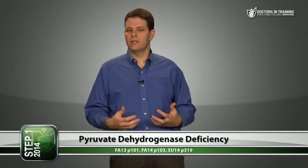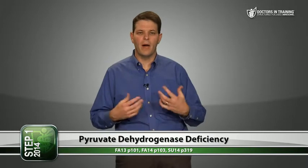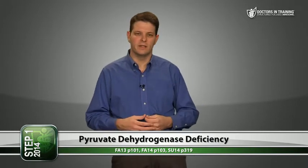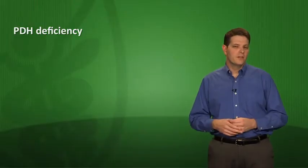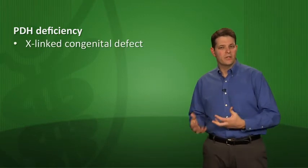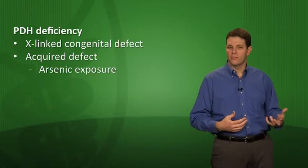What if you're deficient in pyruvate dehydrogenase and can't make acetyl-CoA? This is called pyruvate dehydrogenase deficiency. You get a backup of pyruvate that gets converted to other things such as lactate, resulting in lactic acidosis, or it can back up and be converted to alanine. Besides lactic acidosis, this also results in neurological defects. PDH deficiency can be X-linked congenital or an acquired defect, such as from arsenic exposure.